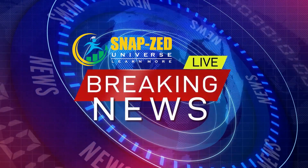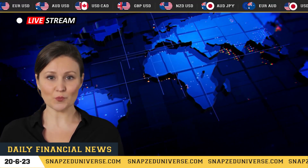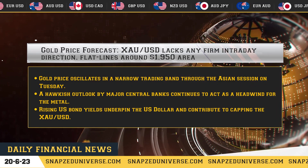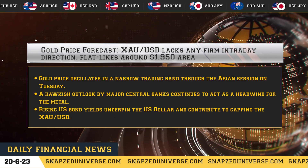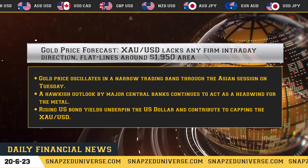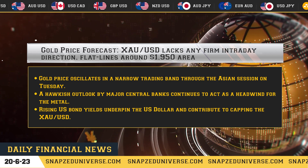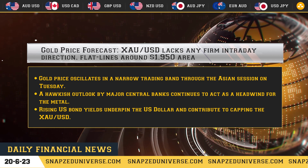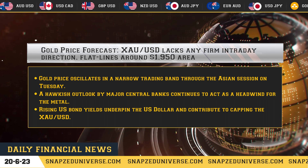Here with the financial headlines brought to you by Snap Zed Universe. Hello and welcome. Today's financial report: gold price forecasts. USD lacks any firm intraday direction, flat-lining around the $1,950 area. Gold price oscillates in a narrow trading band through the Asian session on Tuesday. A hawkish outlook by major central banks continues to act as a headwind for the metal.